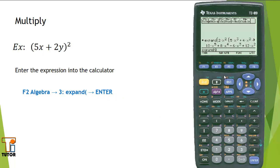I'll enter in the function. Notice I'll use a begin parenthesis: 5x plus 2y. I'll close off my binomial. I'll square it.